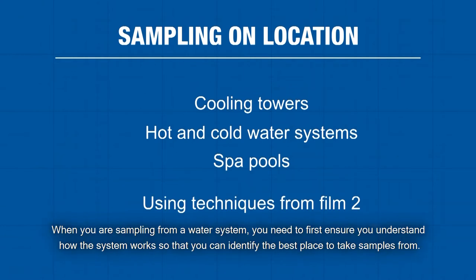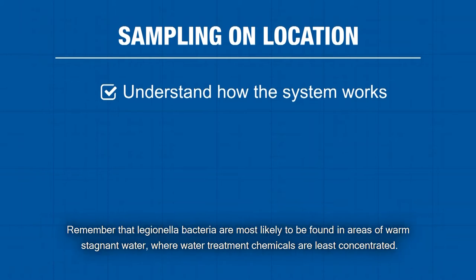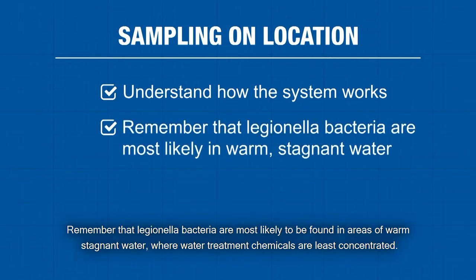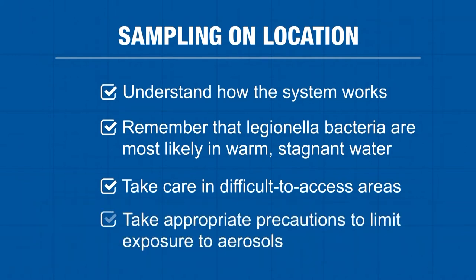When you are sampling from a water system, you need to first ensure that you understand how the system works, so that you can identify the best place to take samples from. Remember that Legionella bacteria are most likely to be found in areas of warm, stagnant water where water treatment chemicals are least concentrated. You need to take care when sampling, as some equipment can be in locations that are awkward to access, and you should always take appropriate precautions to limit your exposure to aerosols from potentially contaminated water.